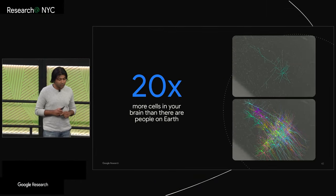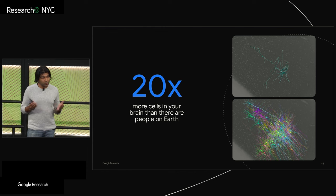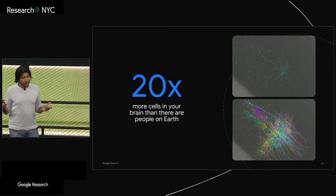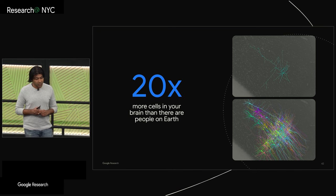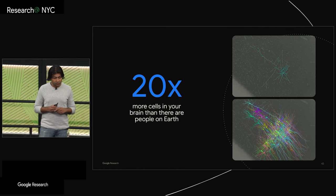There's 20 times more cells in your brain than there are people on Earth. One of the major hypotheses in neuroscience is that it's the network of connections formed between those 160 billion cells that enables you to process information, remember, plan, feel emotions, to be human.